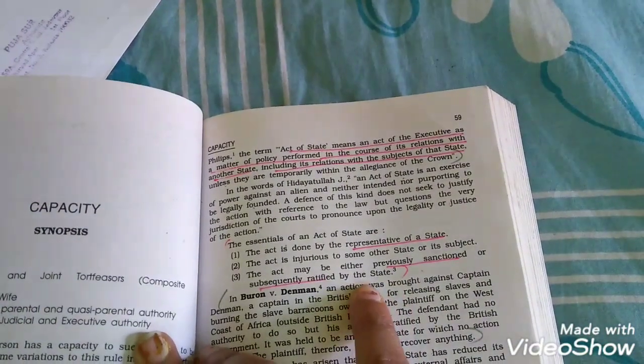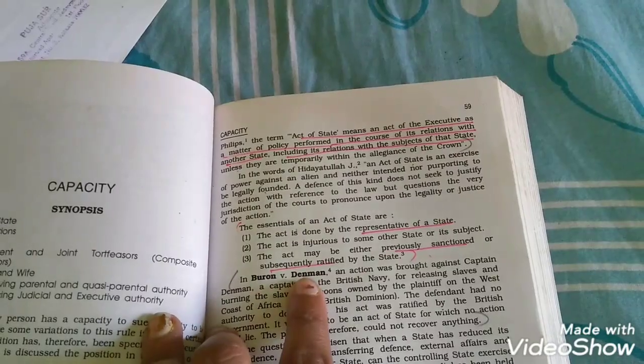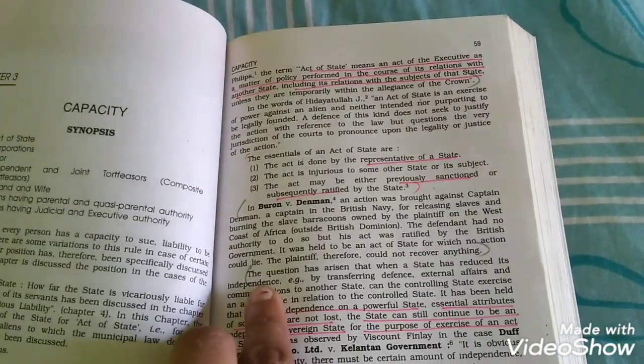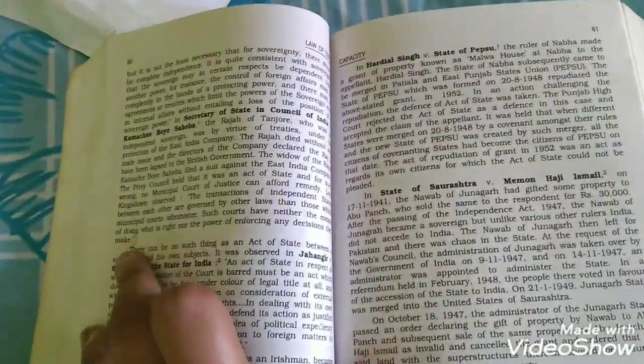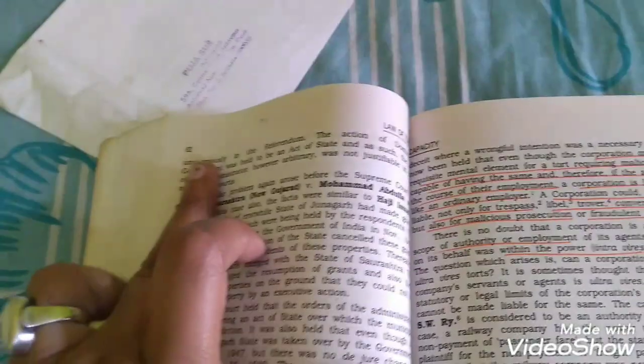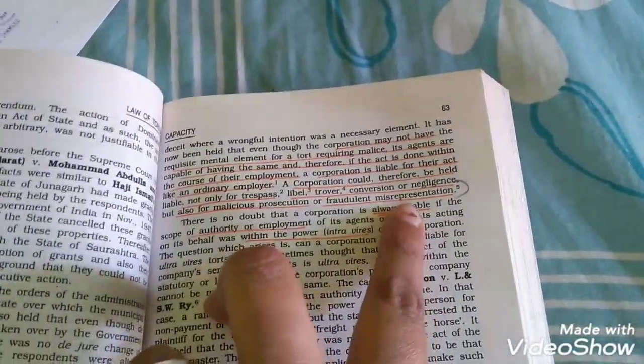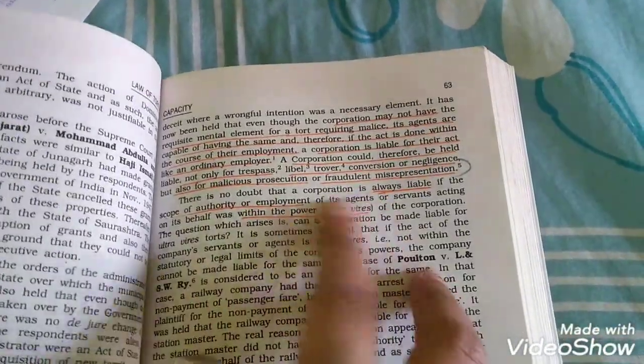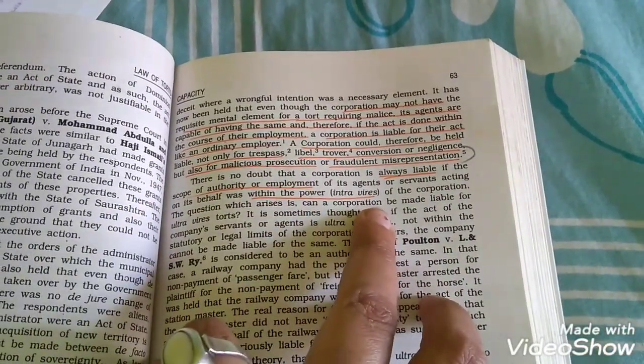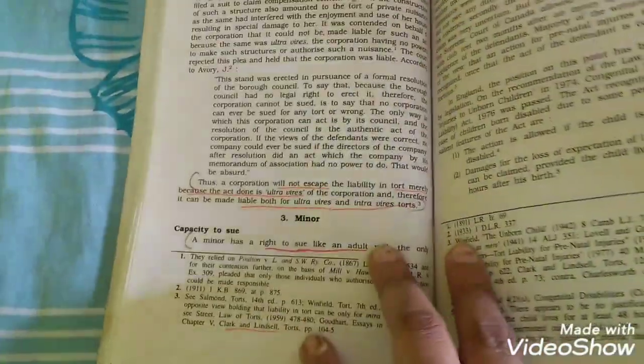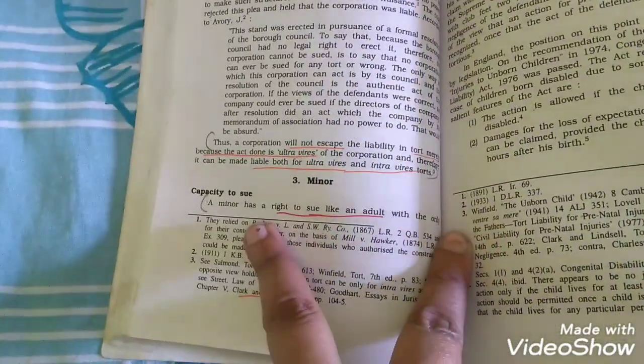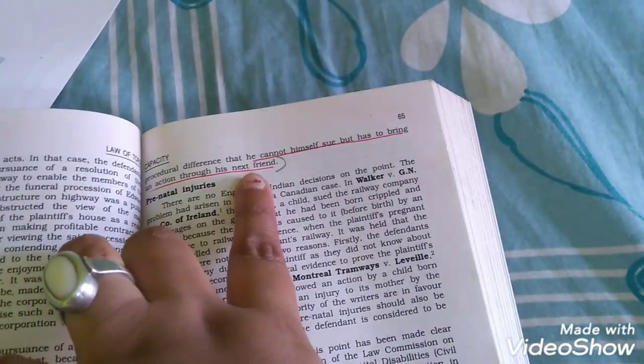Act of state and act from there to subsequently ratified by the state in Buron versus Denman. From there to anything, the question has arisen from there to the next page. That's a corporation. A corporation from there to misrepresentations. Then just read the next paragraph, intravires up to there. Come to next page. That's a corporation from there to intravires tort capacity to sue a minor, from there to next friend.